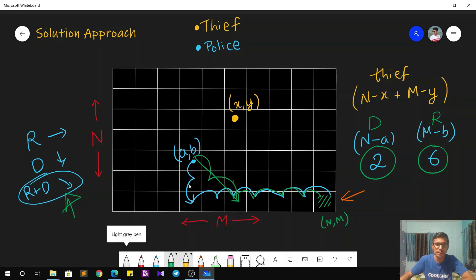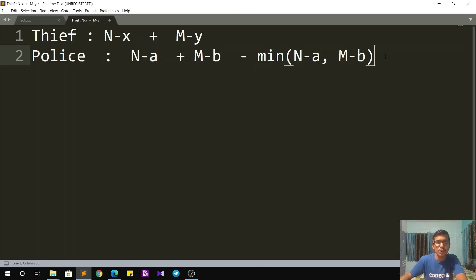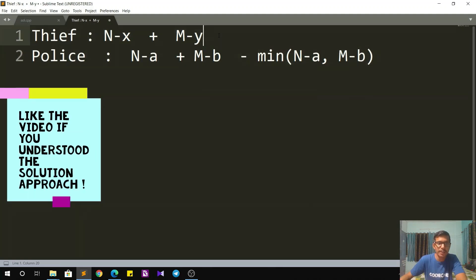Now let's summarize the times for both of them. The thief takes N minus X plus M minus Y time to reach the target cell, whereas the police takes N minus A plus M minus B minus the minimum of those both, because he can also make the moves of the type right plus down. Now we just have to check who reaches first at the target cell. If the thief reaches before or at the same time as police, then the answer is yes because the thief can escape; otherwise the answer is no.